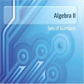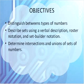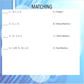Today we're going to be looking at sets of numbers for Algebra 2. We're talking about distinguishing between types of numbers, describing sets using verbal description, roster notation, and set builder notation, and determining intersections and unions of sets of numbers. Let's get started.